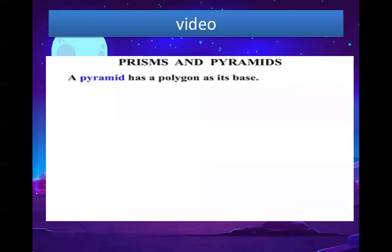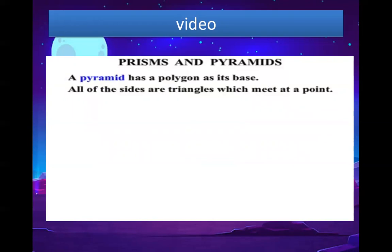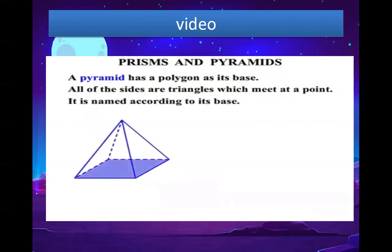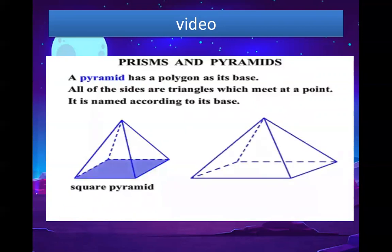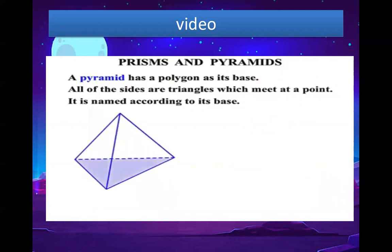Now a pyramid has a polygon as its base, and all of the sides are triangles which meet at a point. It is named according to its base. The base has all four sides equal — it's a square — so it's known as a square pyramid. This pyramid has a rectangle as its base, so it's known as a rectangular pyramid. This one has a triangle as its base, so it's known as a triangular pyramid. Another word for triangular pyramid is a tetrahedron.